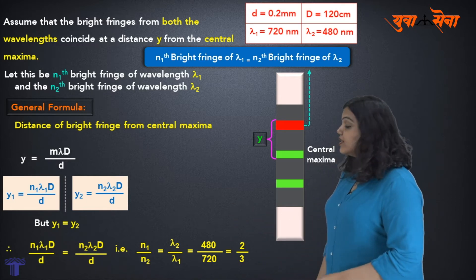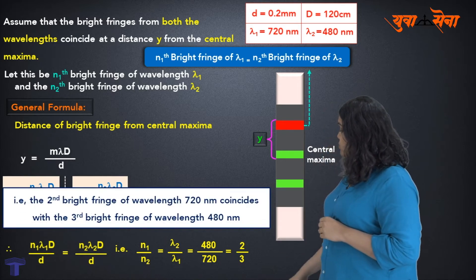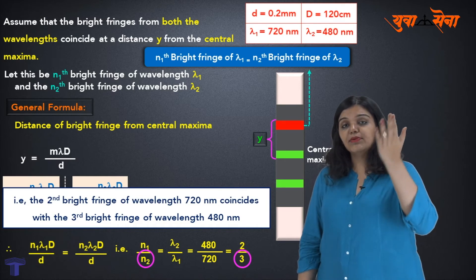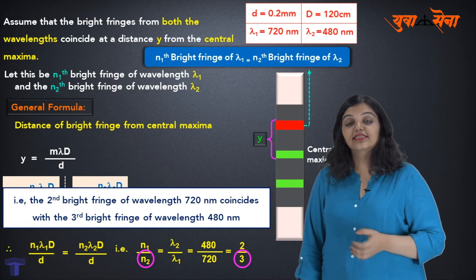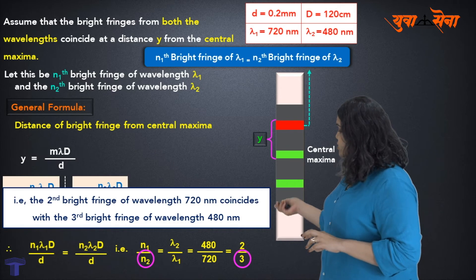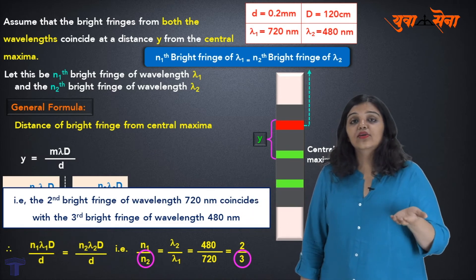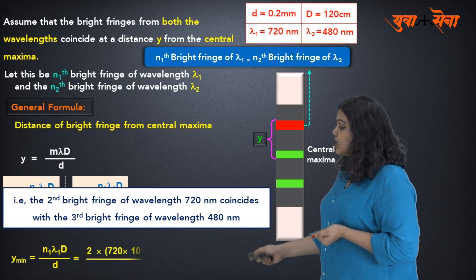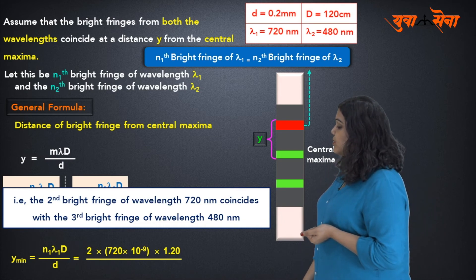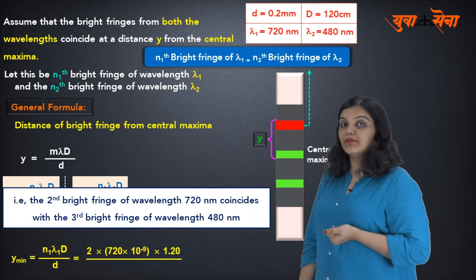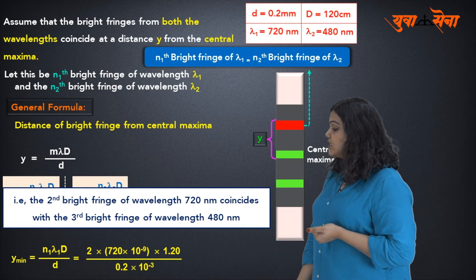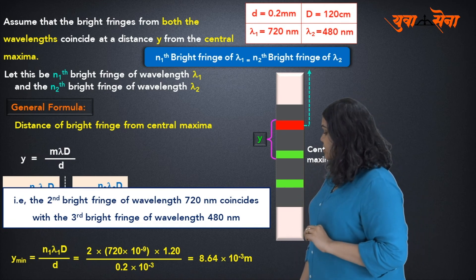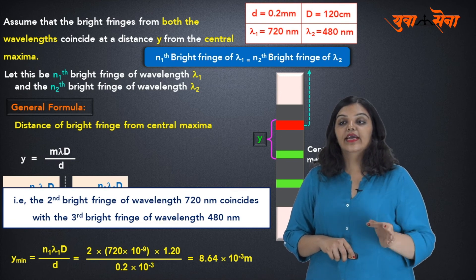Once n1/n2 = 2/3 and we take n1 = 2, we can directly find y = n1·λ1·D/d = 2 × 720×10⁻⁹ × 1.2 / (0.2×10⁻³), which gives the final answer: y = 8.64×10⁻³ m, or 8.64 mm. This is the distance at which the bright fringes due to both wavelengths coincide.